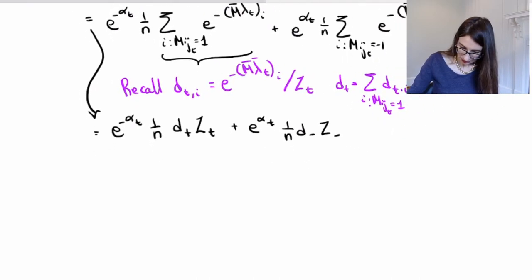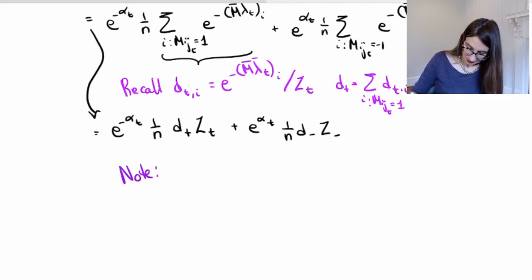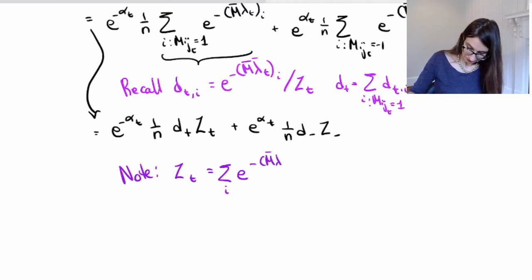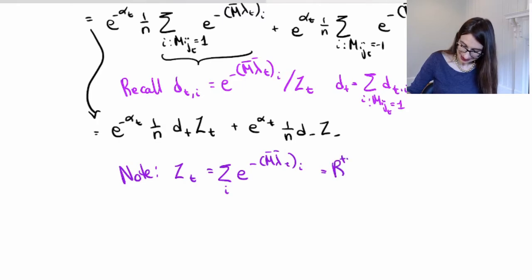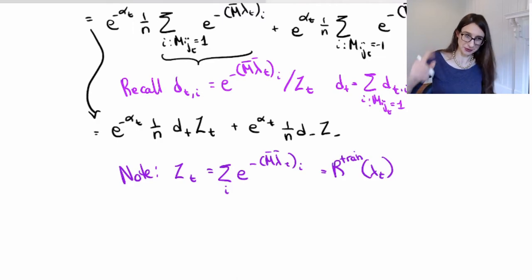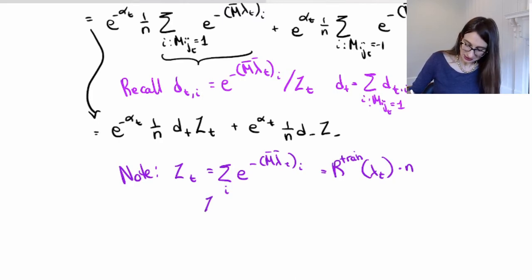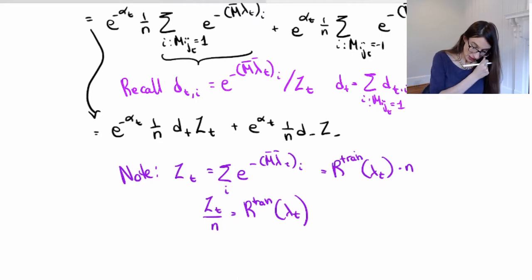So Z_t over n equals R_train. Now we have this lovely recursion. All these things were equal to R_{lambda_{t+1}}. So R_train(lambda_{t+1}) equals Z_t over n. That gives us R_train at time t times e to the negative alpha_t times d_plus plus e to the alpha_t times d_minus.